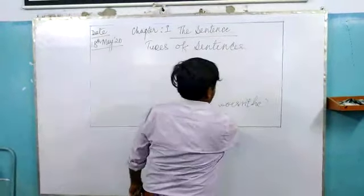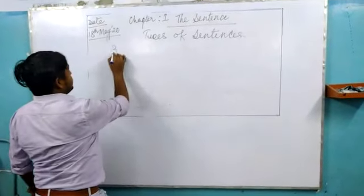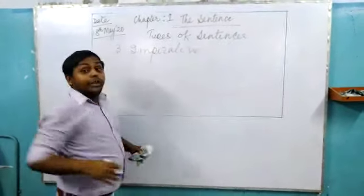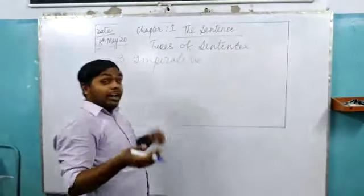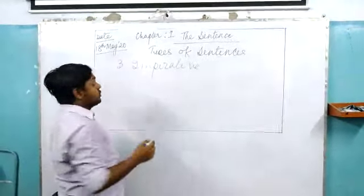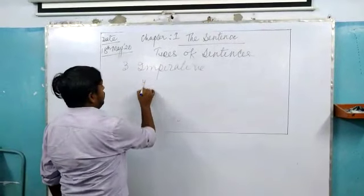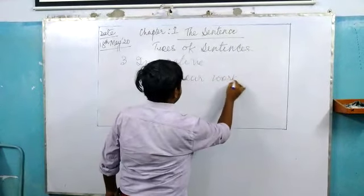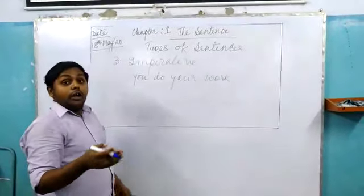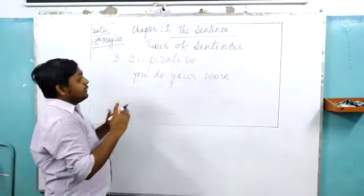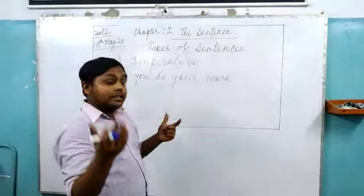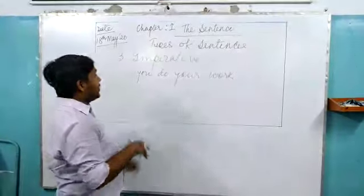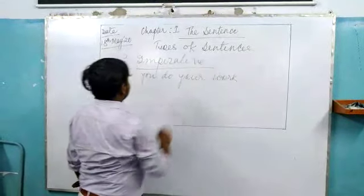Next one is imperative sentences. In imperative sentences, we give commands, suggestions, advice, or orders to someone. Like 'Do your work,' 'Sit down,' or 'You should take a nap now.' We give suggestions, orders, or requests. For example, 'Please help me to do this.' These types of sentences are used in imperative sentences.